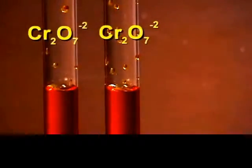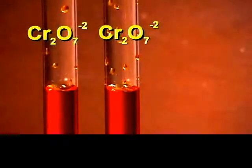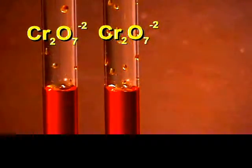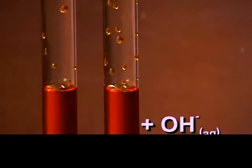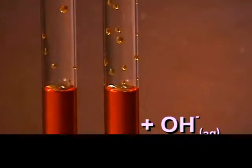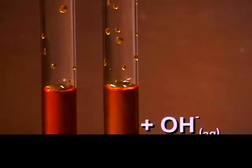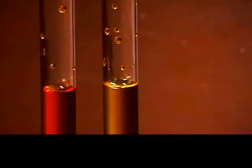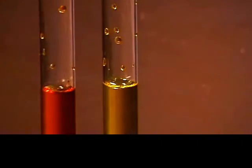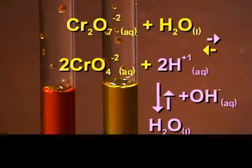We have two test tubes containing a solution of potassium dichromate. We will add some 6 molar sodium hydroxide to one of the tubes. We notice that the solution turns yellow, which indicates that the equilibrium has shifted from the dichromate to the chromate.